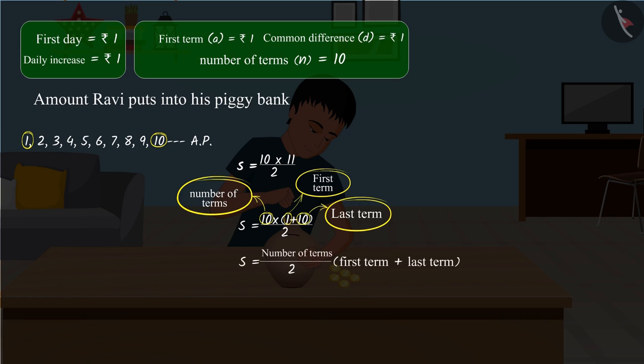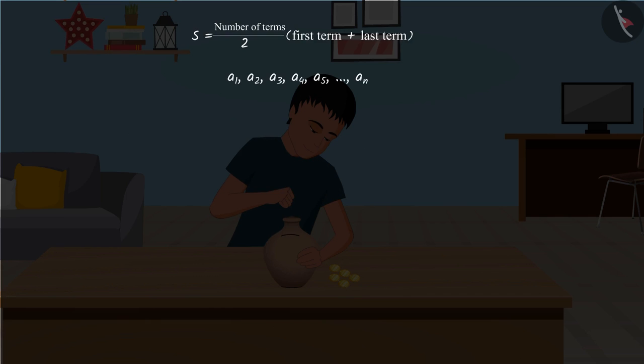Therefore, in this manner, we can find the sum of terms of a finite arithmetic progression. Now, if we consider an arithmetic progression of n terms whose first term is a and last term, that is the nth term is an.